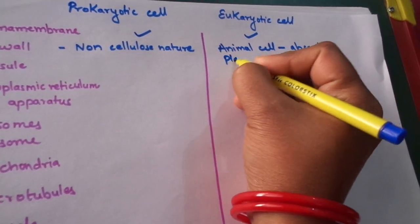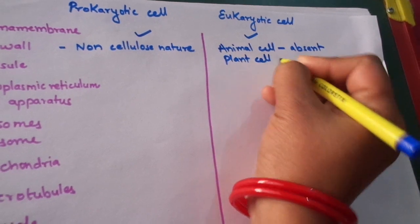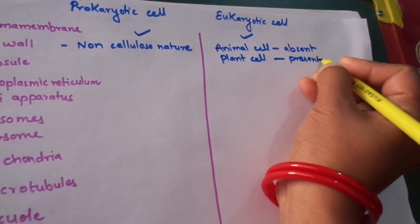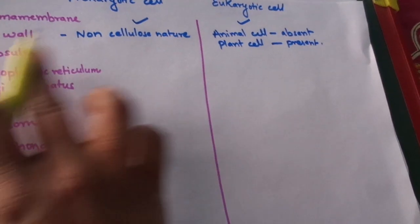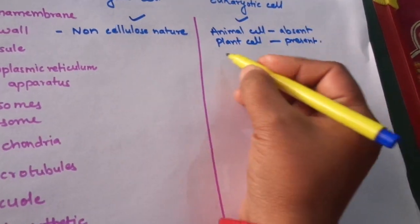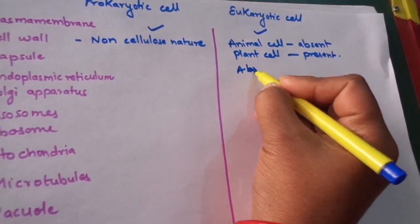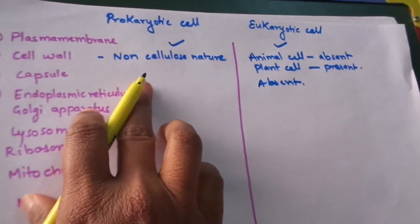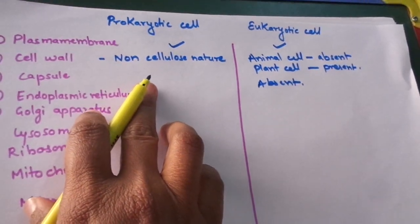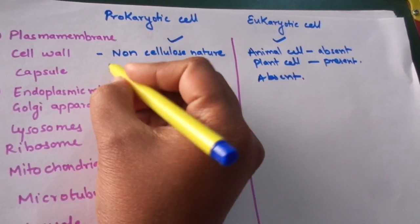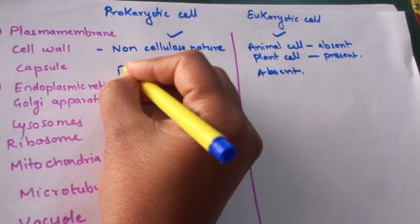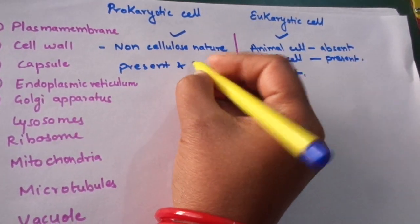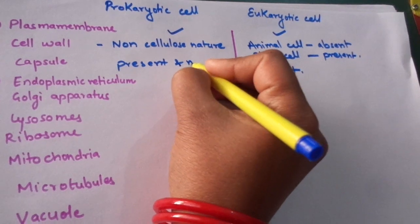But in the plant cell, the cell wall is present. The capsule is absent in the case of the eukaryotic cell. And in the case of the prokaryotic cell, if it is present, it is composed of mucopolysaccharides.